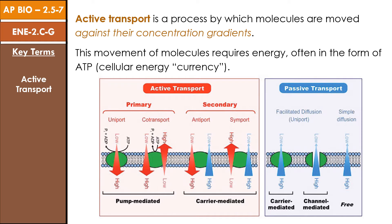Often, the energy source is the nucleotide adenosine triphosphate, or ATP for short. In eukaryotes, ATP is produced in the mitochondria and plastids, and it has chemical energy stored in its terminal phosphate bond. This energy is released when ATP is converted to adenosine diphosphate, or ADP, in a hydrolysis reaction that breaks the bond between the terminal phosphate and the rest of the molecule.